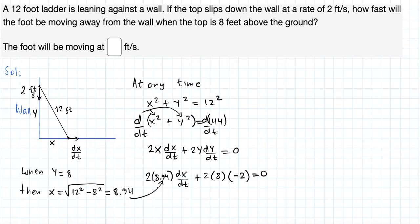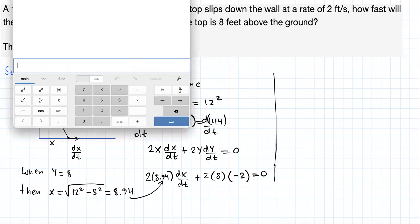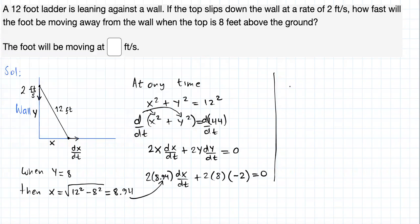So now 2 times 8.94 is equal to, following, 2 times 8.94, 17.88, 17.88 times dx dt, which is what we're looking for. 2 times 8 is 16 times 2, 32. Positive times negative, negative, right? Minus 32 equals 0.